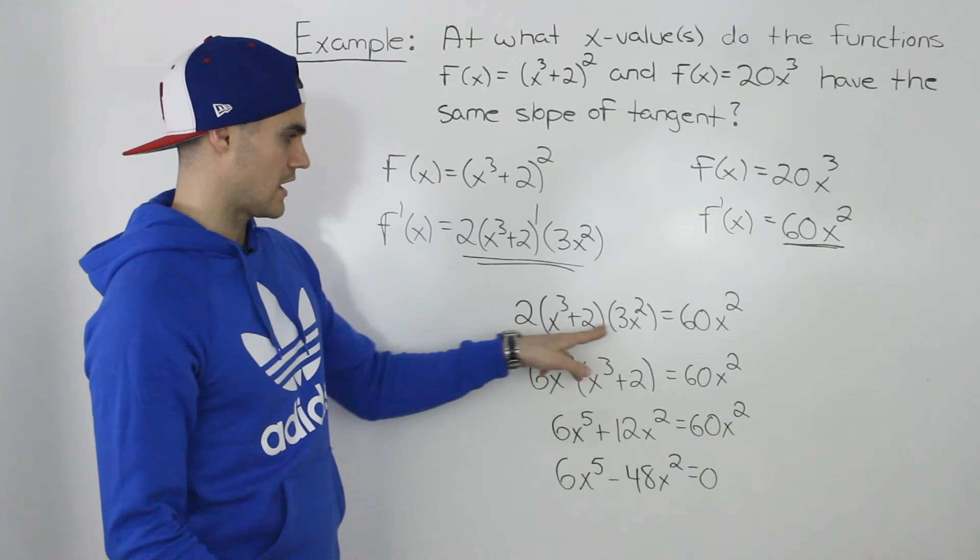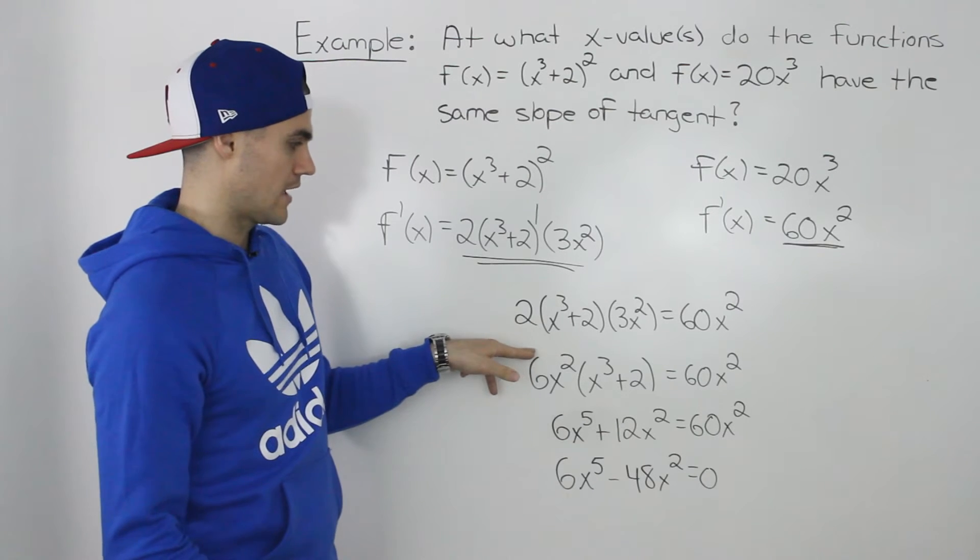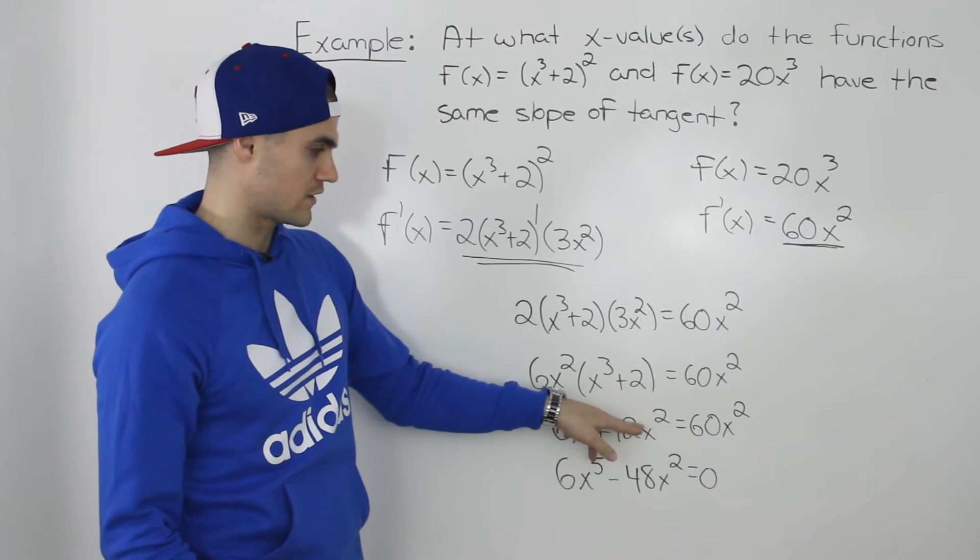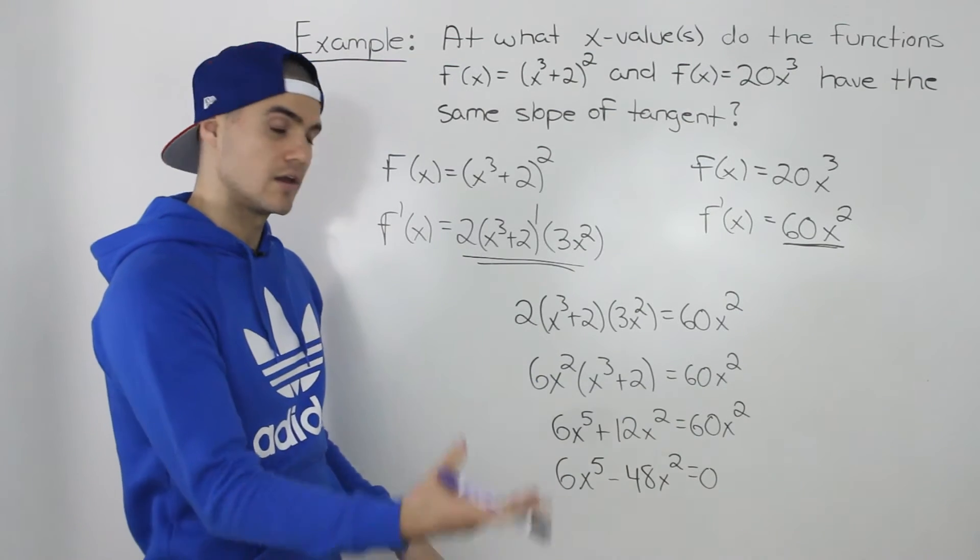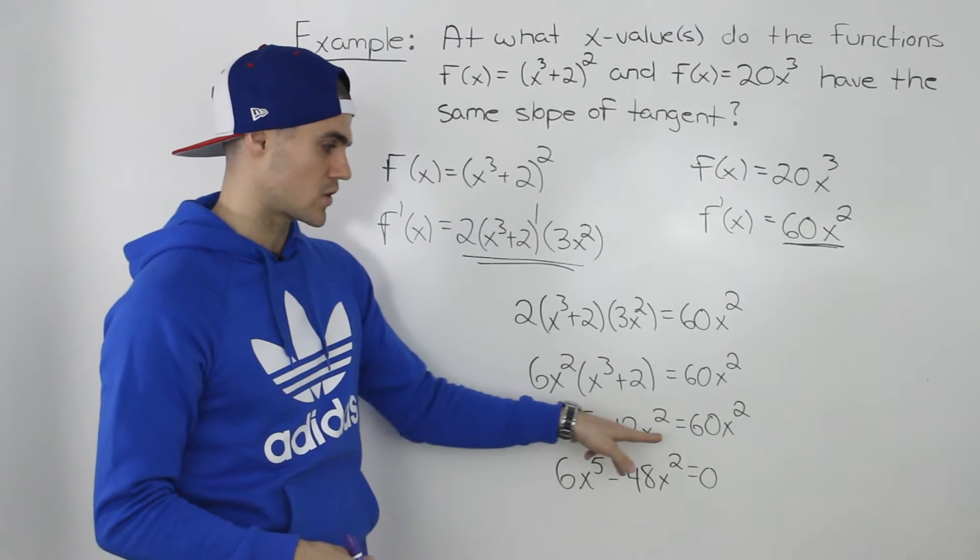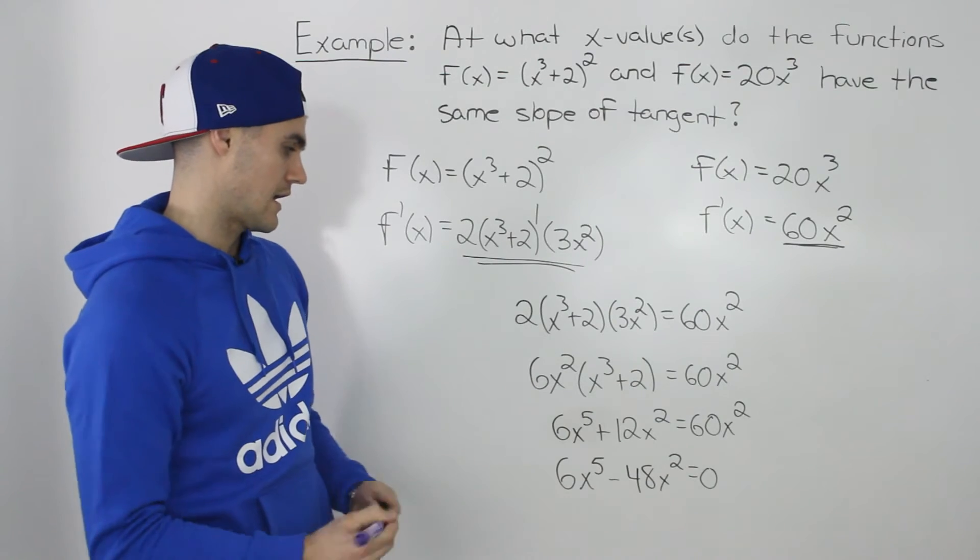we can multiply the 2 and the 3x² here. We get 6x² and then we would distribute that inside the bracket to end up with 6x⁵ + 12x² equals 60x². Bring the 60x² over to the left side. So 12x² minus 60x² would give us -48x².